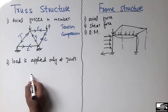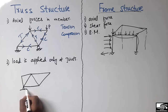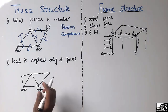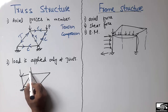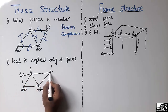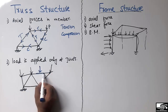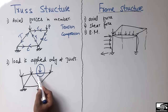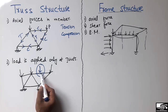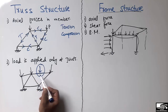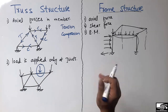Consider another example of a truss structure. The load is applied only at joints — you cannot apply a load on the member itself. The members are connected at joints, and you can only apply loads at those joints. You are not allowed to apply a load on a member where there is no joint. Load should always be applied at the joint in a truss structure.